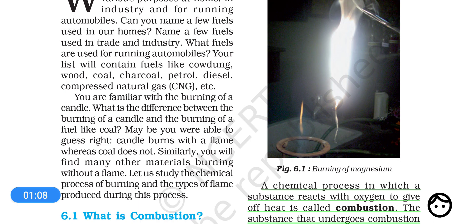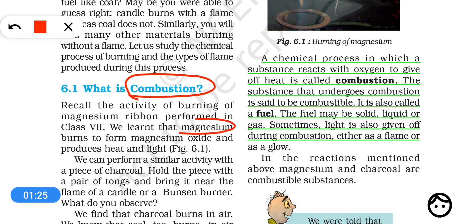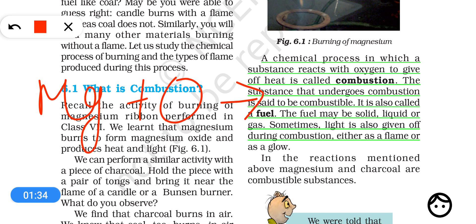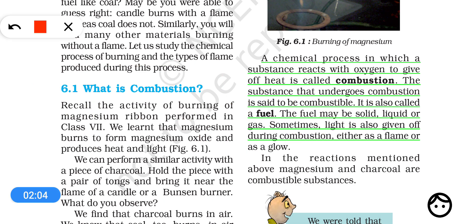This is all we are going to discuss in this chapter. First of all, what is combustion? Combustion is actually burning — when something burns, it is undergoing combustion. In class 7th, you did the activity of burning magnesium. When magnesium burns, it reacts with oxygen, undergoes combustion, and produces heat. It also produces a white flame, so it produces light also. Combustion is a chemical process in which a substance reacts with oxygen to give off heat.